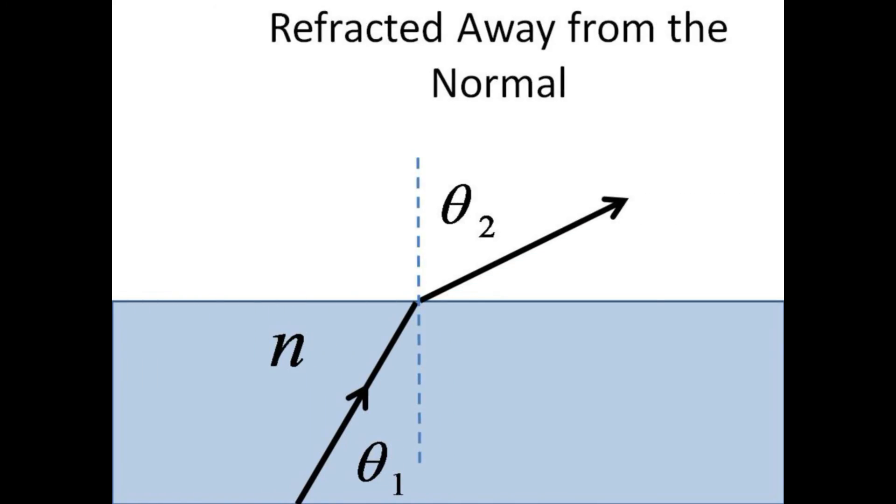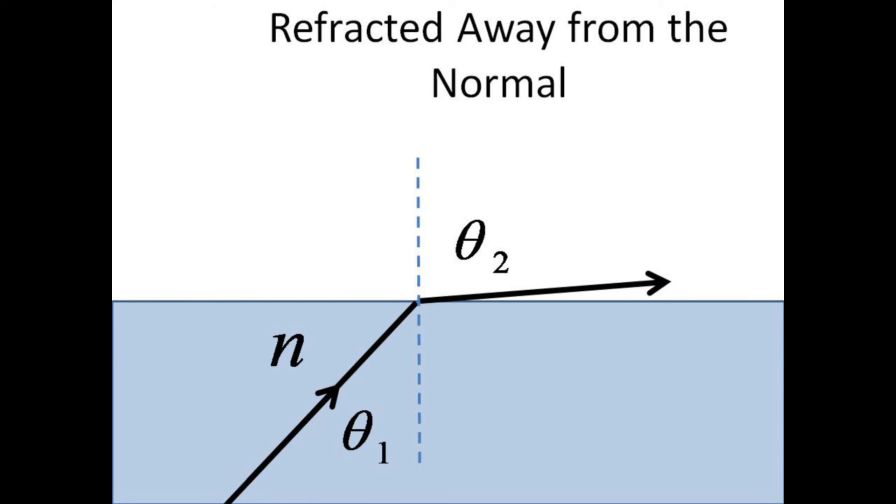We now turn to the concept of total internal reflection. When a beam of light emerges from glass or water into air, it is bent away from the normal. As the incident angle is increased, the refracted angle gets even larger, approaching 90 degrees.